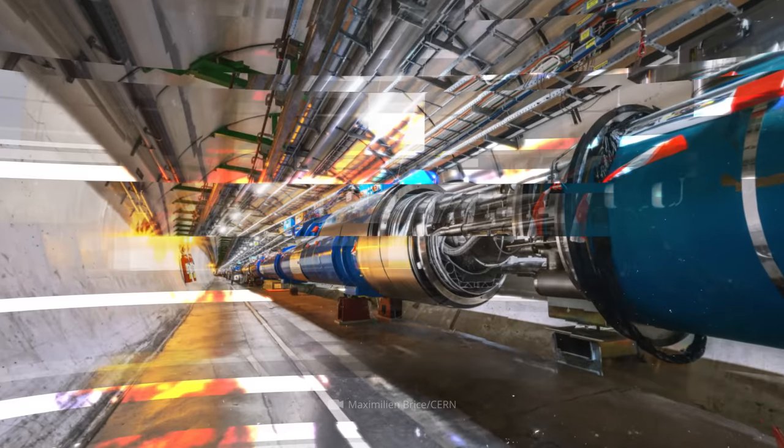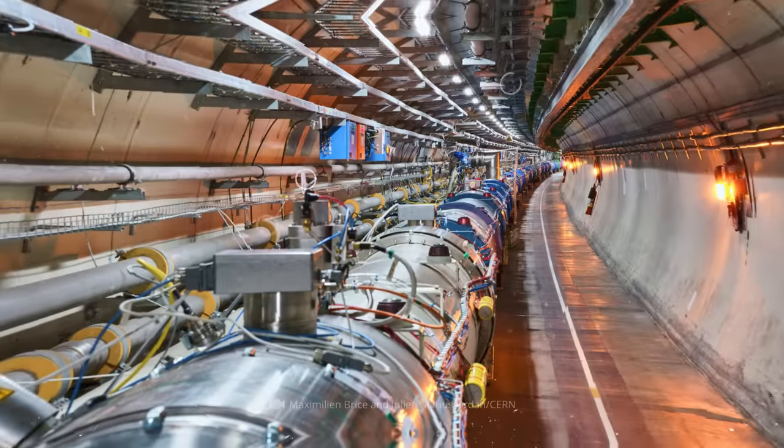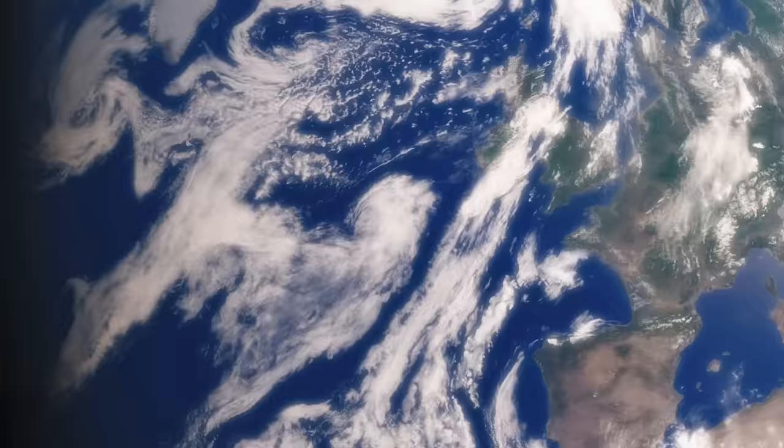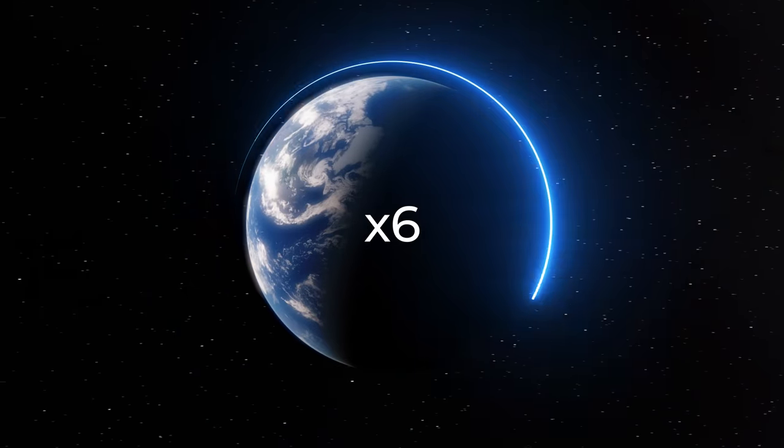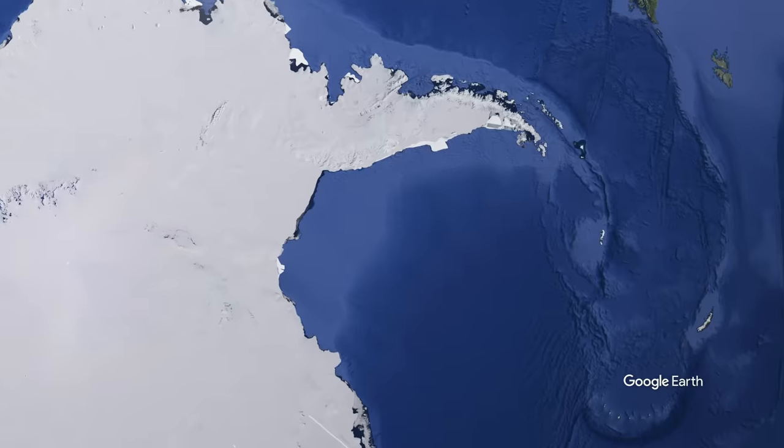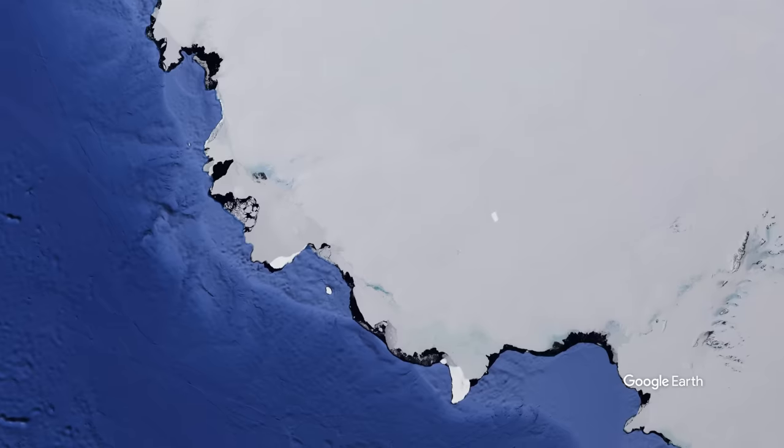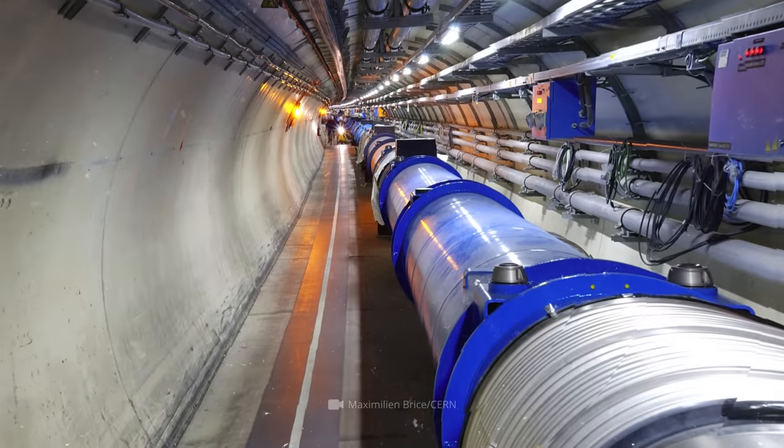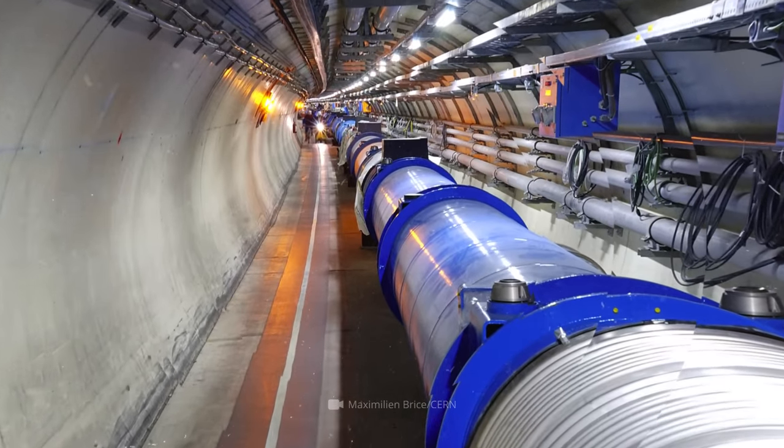If scientists got tired of the LHC and decided to dismantle it, these wires could be wrapped around the Earth about six times at the equator. And even after that, there'd be enough wire left to run a power grid somewhere in Antarctica. Although, why a power grid in Antarctica? Well, they aren't planning to disassemble the LHC yet.